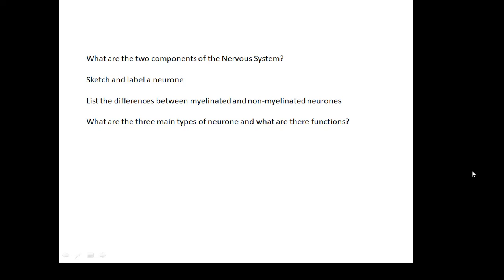Review questions: What are the two components of the nervous system? Sketch and label a neuron. List the differences between myelinated and non-myelinated neurons. What are the three main types of neuron and what are their functions?